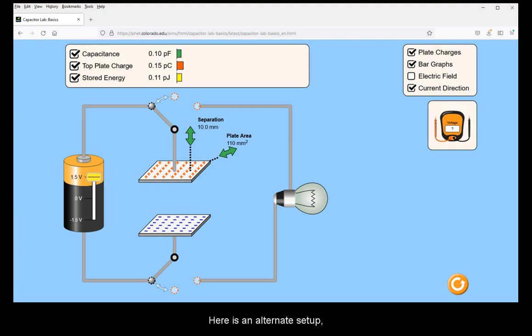Here is an alternate setup still with the same battery but with a capacitance of 0.1 picofarads. Which of the two setups is going to deliver greater work, hence a brighter flash?